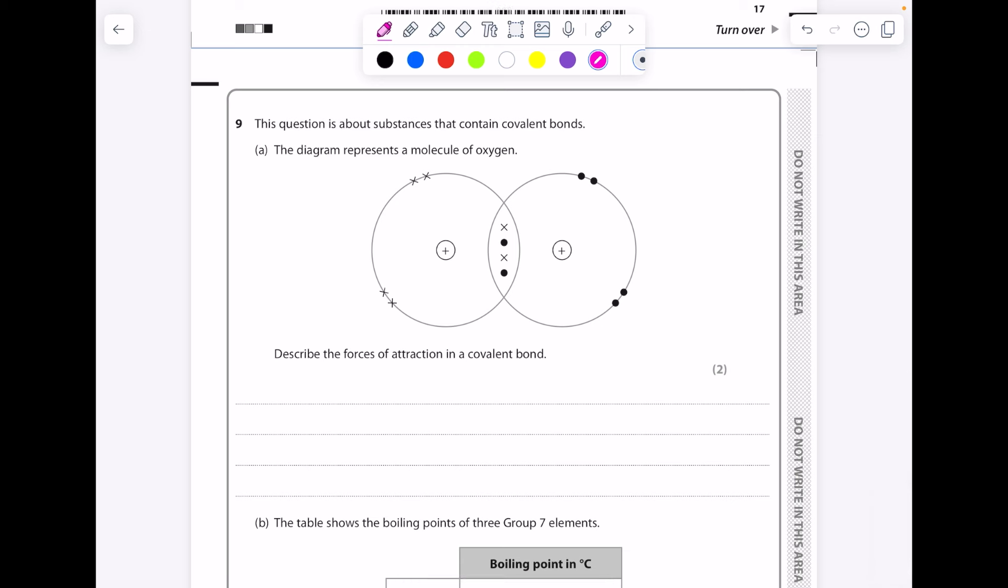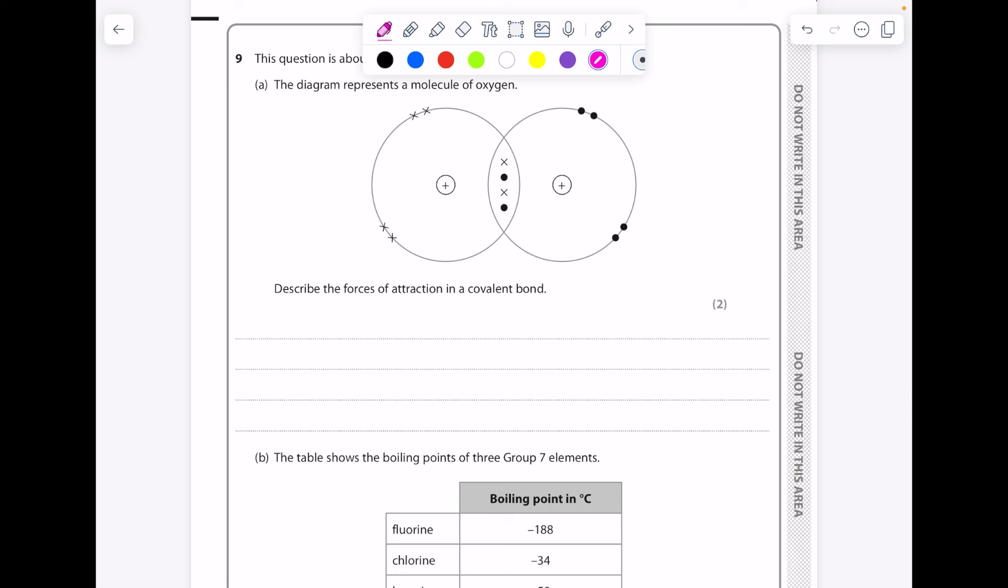This question is about substances that contain covalent bonds. The diagram represents a molecule of oxygen. Describe the forces of attraction in a covalent bond. So really you're defining a covalent bond, which is the electrostatic attraction between nuclei and a shared pair of electrons, which you can see right there that they're sharing electrons.